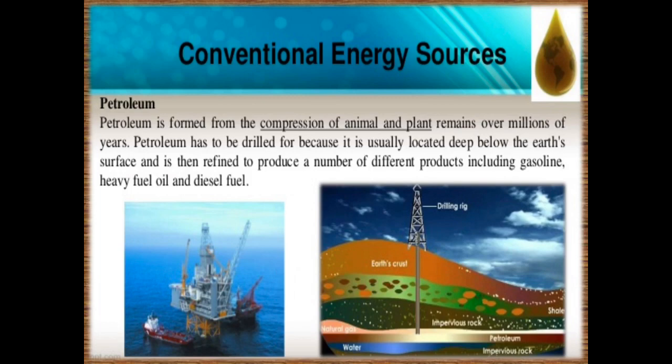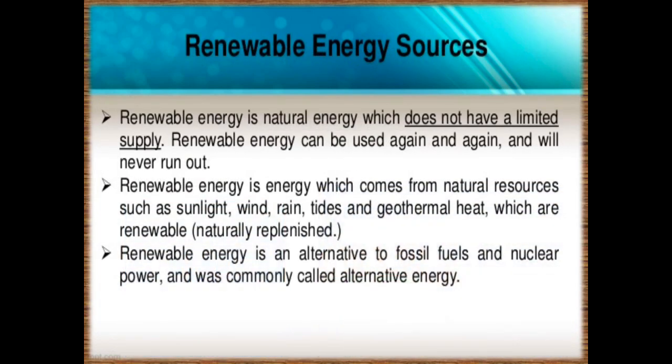Another conventional energy source is petroleum. Petroleum is also found between the layers of sedimentary rock and is drilled from oil fields located in offshore and coastal areas. The crude oil is then sent to refineries for processing to produce a variety of products like petrol, diesel, kerosene, wax, plastics, and lubricants — all these are derived from petroleum.